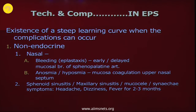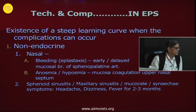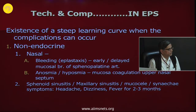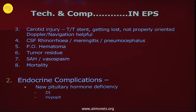The steep learning curve is when complications can occur. Complications may be non-endocrine and endocrine. For non-endocrine nasal complications, bleeding or epistaxis — early or delayed — is always caused by the mucosal branch of the sphenopalatine artery. Anosmia or hyposmia can occur when you coagulate the mucosa in the upper nasal cavity. Sphenoid and maxillary sinusitis, mucocele, or synechia can present with headache, dizziness, and fever two to three months after surgery. Carotid injury should be immediately recognized and treated by stenting; it occurs when the surgeon loses orientation.